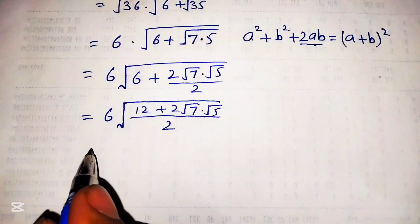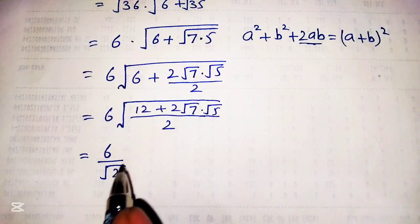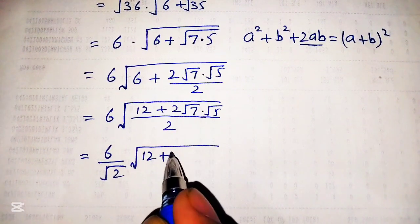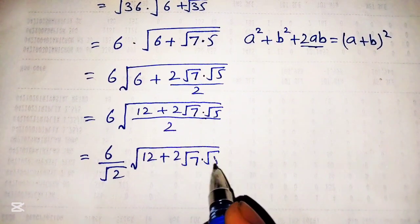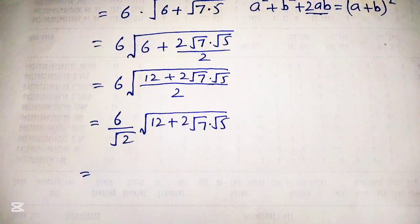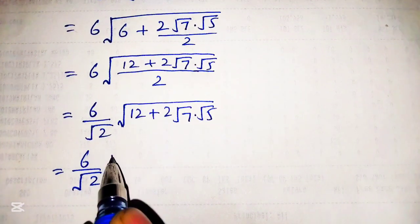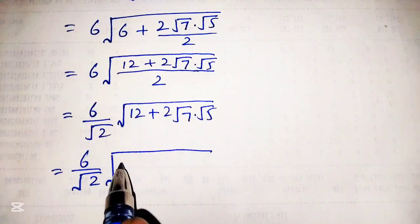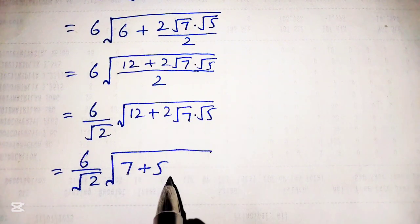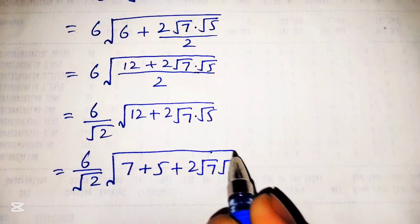Again separating the square root of numerator and denominator, we get 6 over square root of 2. The numerator terms can be written as 12 plus 2 times square root of 7 times square root of 5. Now we can break 12 as 7 plus 5. So the square root contains 7 plus 5, and both terms are in accordance with the formula terms, giving us 7 plus 5 plus 2 times square root of 7 times square root of 5.